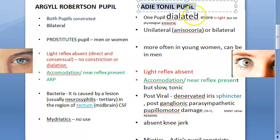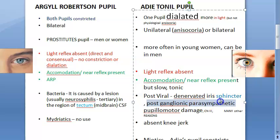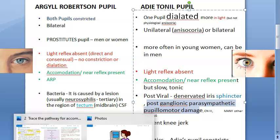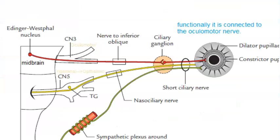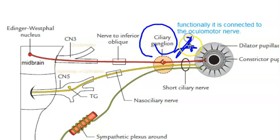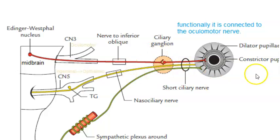The problem in Adie's tonic pupil is post-ganglionic parasympathetic pupillomotor damage. The image here shows the dilator pupillae and constrictor pupillae muscles to illustrate this post-ganglionic involvement.